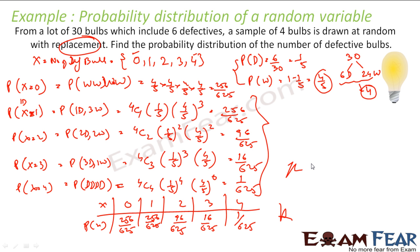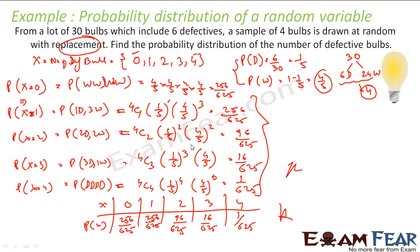If you do not understand these things, you can watch the previous probability videos where we explain how we got this. From 4 balls, 1 is defective: we use 4C1. That is the combination we have used, and then the probability is 1 by 5, because 1 is defective and 3 are correct. For 2 defective, it is 4C2, with probability of defective 1 by 5 and non-defective 4 by 5. For 3 defective it is 4C3.